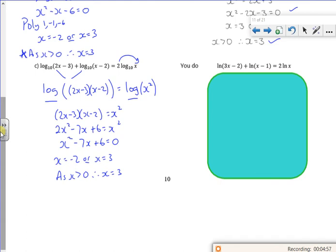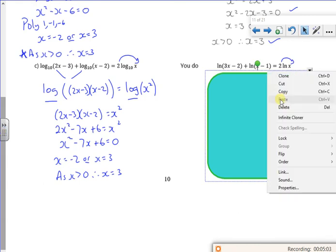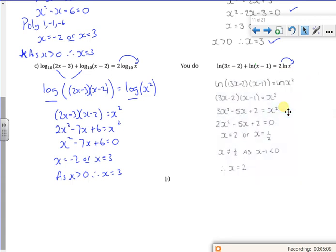One for you to do. So join them together first and take the two up. Just not letting me delete it. So join them together first, get rid of the logs, expand your brackets, rearrange it, get your numbers.